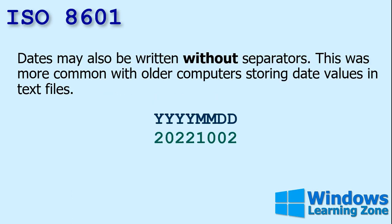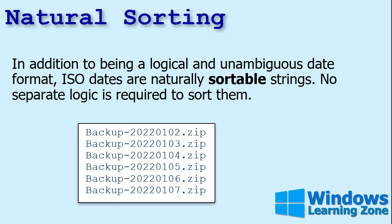Dates may also be written without separators. This was more common in older computers when you were using text files to store dates — you could just write it without any slashes or hyphens. In addition to being a logical and unambiguous date format, ISO dates are naturally sortable strings.